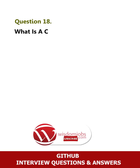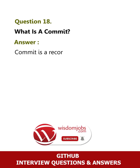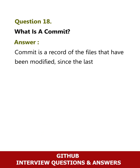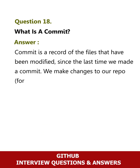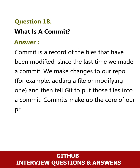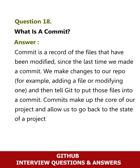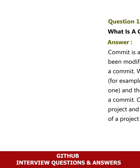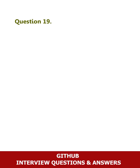Question 18: What is a commit? Answer: A commit is a record of the files that have been modified since the last time we made a commit. We make changes to our repo — for example, adding a file or modifying one — and then tell Git to put those files into a commit. Commits make up the core of our project and allow us to go back to the state of a project at any point.